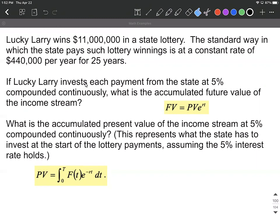We want to know if Lucky Larry invests each payment from the state at 5% compounded continuously, what's the accumulated future value of this income stream? We have our future value formula: FV = PV * e^(rt). And then we also want to know what was the accumulated present value of the income stream at 5% compounded continuously. This is basically what the state has to invest right now to make these payments for the rest of Lucky Larry's 25 years.